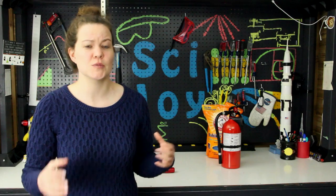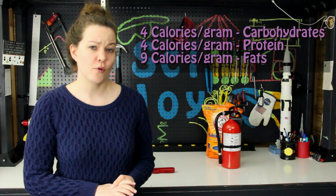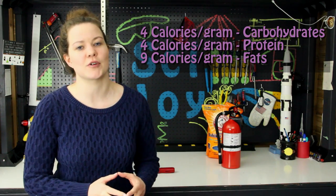While the protein, carb, and fat caloric values might change from food to food, in general if you eat a varied diet, it's going to average out to be about 4 calories per gram for proteins and carbohydrates and about 9 calories per gram for fats.